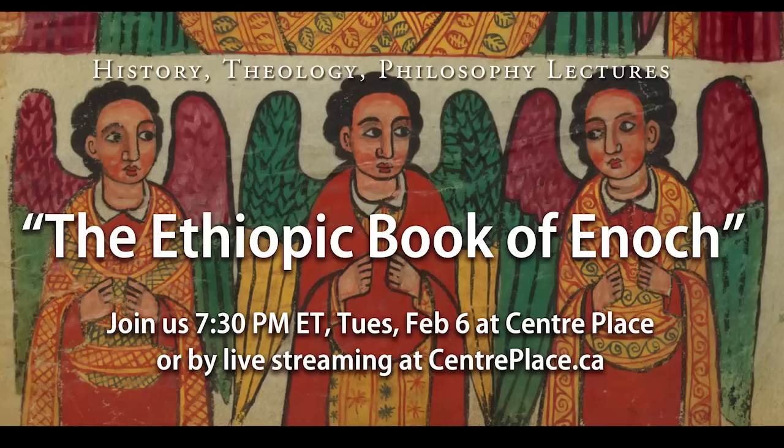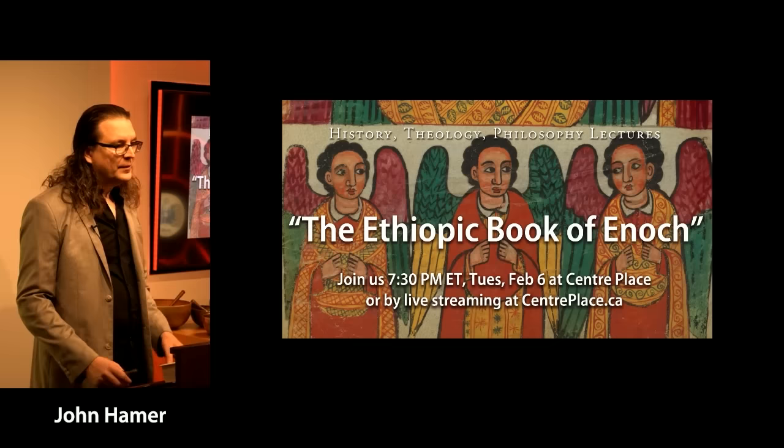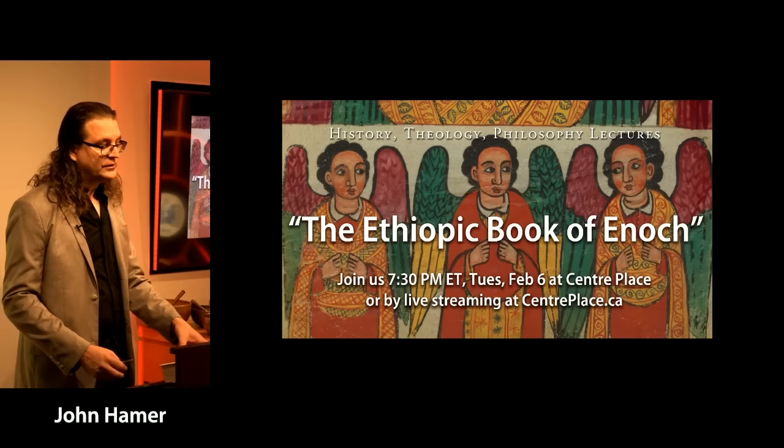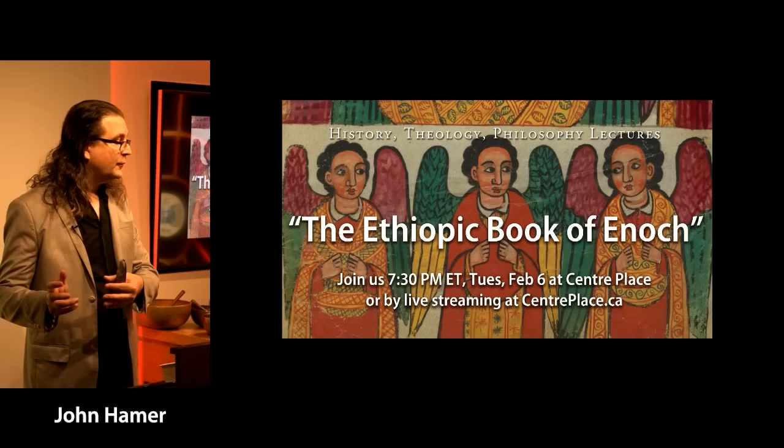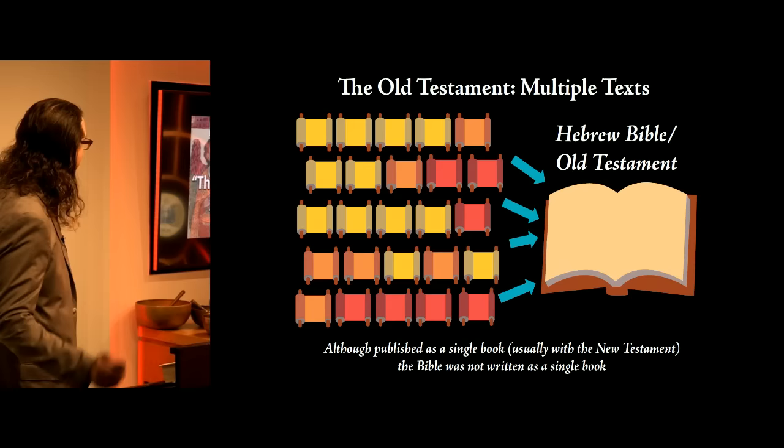Today we're talking about the Ethiopic Book of Enoch, sometimes called the Book of Enoch or the First Book of Enoch, because there are actually multiple books of Enoch and we have to differentiate. This is the oldest and most important of the books of Enoch. They're not all written by Enoch — there's First, Second, Third, and Fourth Enoch — and they're coming from very different authors but numbered later.